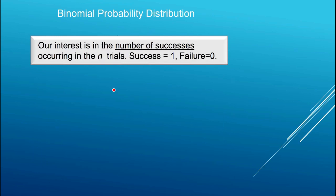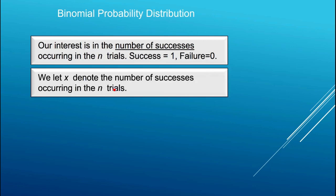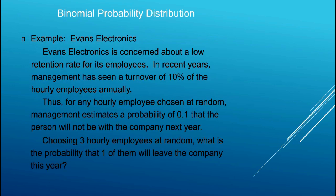Our interest is in the number of successes occurring in n trials, where we numerically code a success as one and a failure as zero. We let x denote the number of successes that occur within n trials.